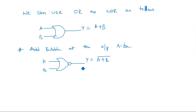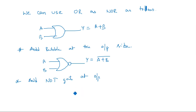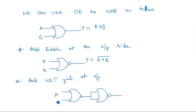Adding a bubble at the output gives (A + B)-bar — that is NOR operation, not OR. So we add a NOT gate at the output. We know a NOT gate can be constructed using a NOR gate with a common input. After passing through this inverter, (A + B)-bar becomes A + B. So OR operation is implemented using NOR gates.